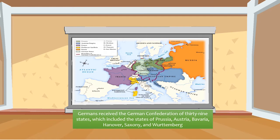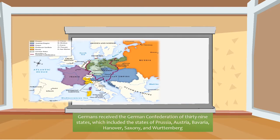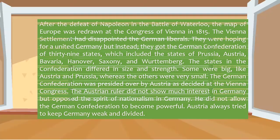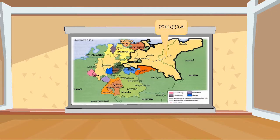The states in the Confederation differed in size and strength — some were big like Austria and Prussia, whereas others were very small. The German Confederation was presided over by Austria, as decided at the Vienna Congress. The Austrian ruler did not show much interest in Germany but opposed the spirit of nationalism there and did not allow the Confederation to become powerful. Austria always tried to keep Germany weak and divided.